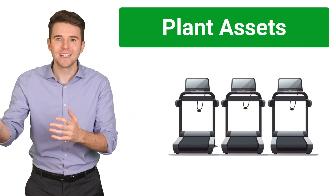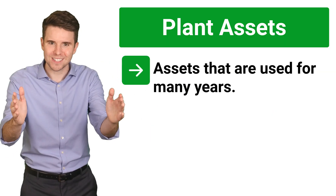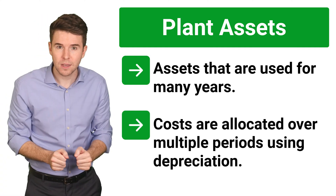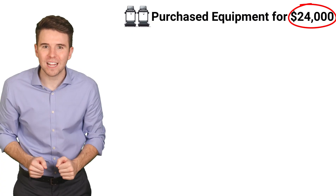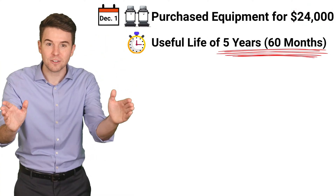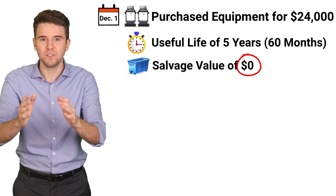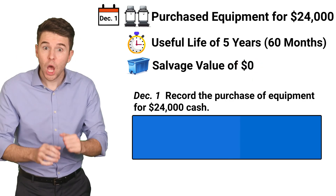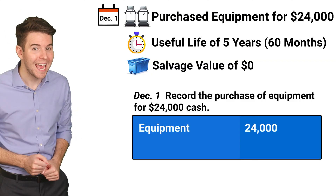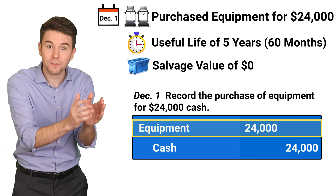Let's do another example, this time with plant assets, which are long-term assets like equipment, machinery, and buildings. When companies purchase these assets, they expect them to be used for many years, and to allocate the cost of these assets over many years, we use something called depreciation. Assume a company purchases equipment for $24,000 cash on December 1st and expects the equipment to have a useful life of 5 years or 60 months. At the end of 5 years, we expect the equipment to be worthless and have a $0 salvage value. To record the purchase of equipment on December 1st, we debit equipment for $24,000 and credit cash for $24,000. Equipment is an asset because we expect future benefits from using it in operations.